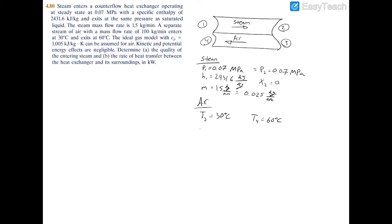And it exits at T4 which is equal to 60 degrees Celsius, and we're told that the mass flow rate is equal to 100 kilograms per minute, which is also 1.67 kilograms per second. Finally, we're told the specific heat of air in this case, Cp, is 1.005 kilojoules per kilogram kelvin.